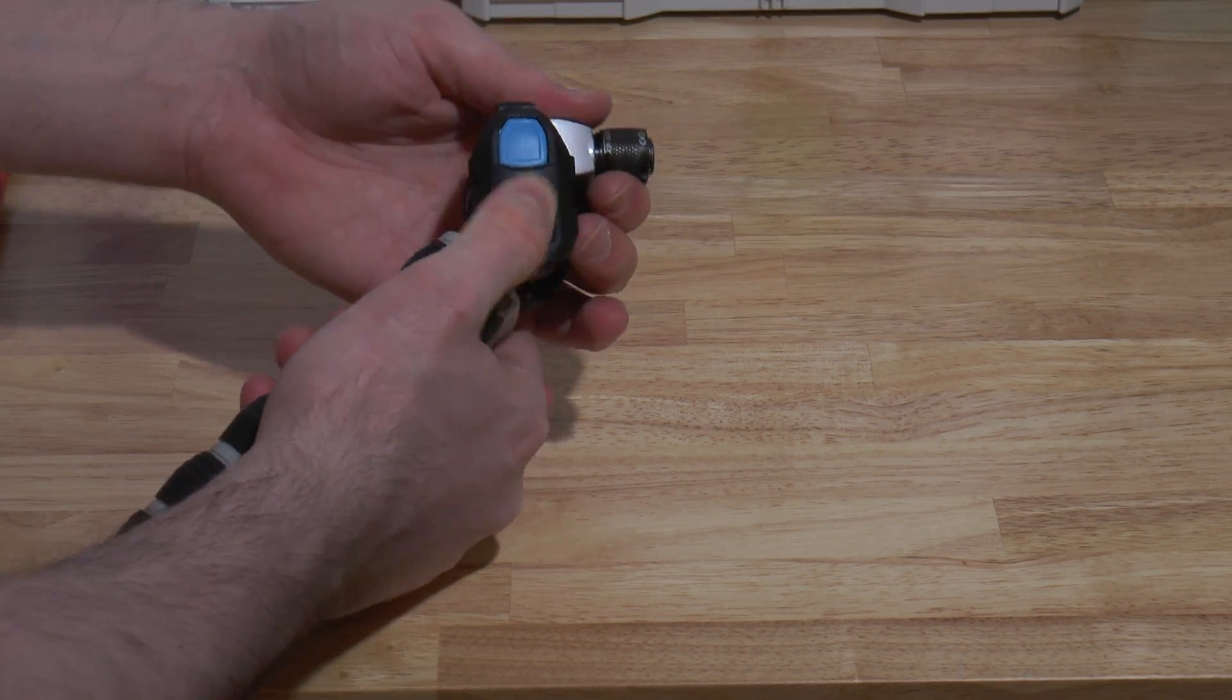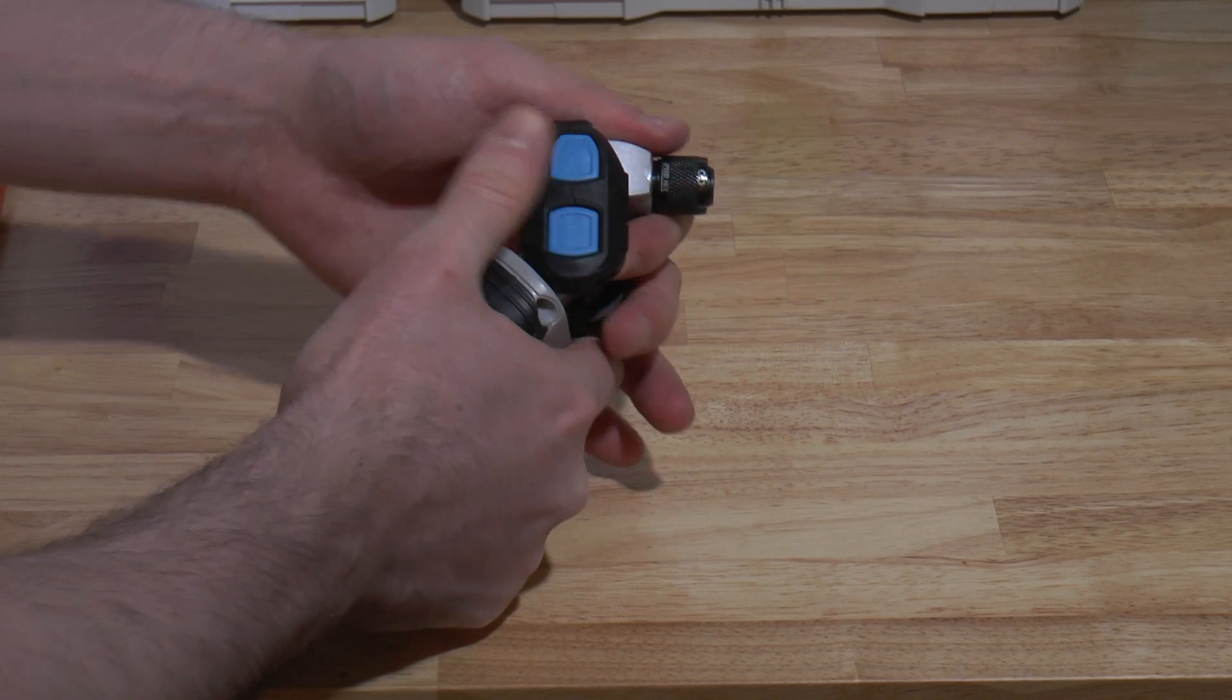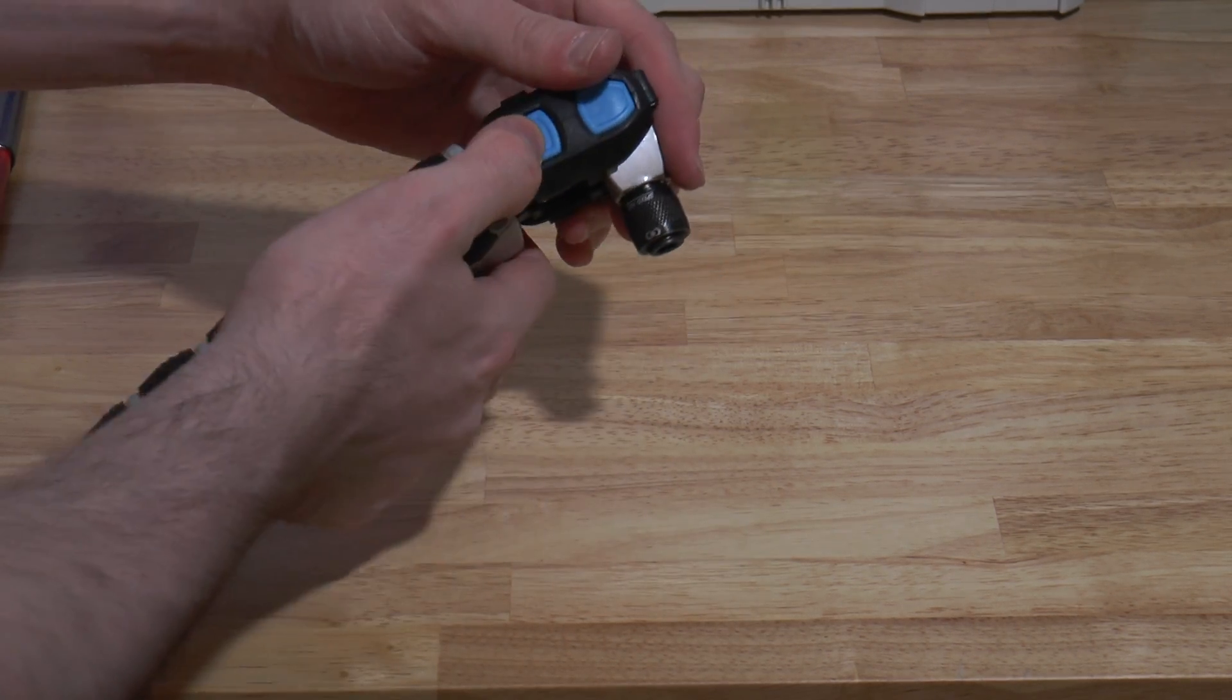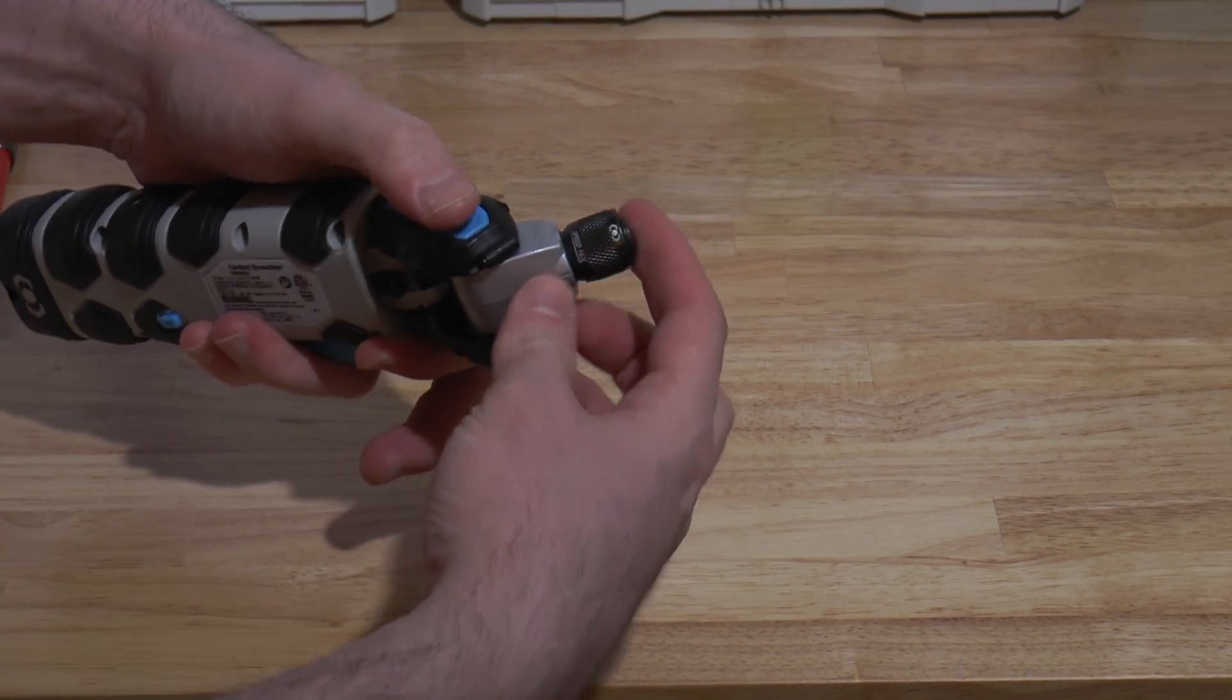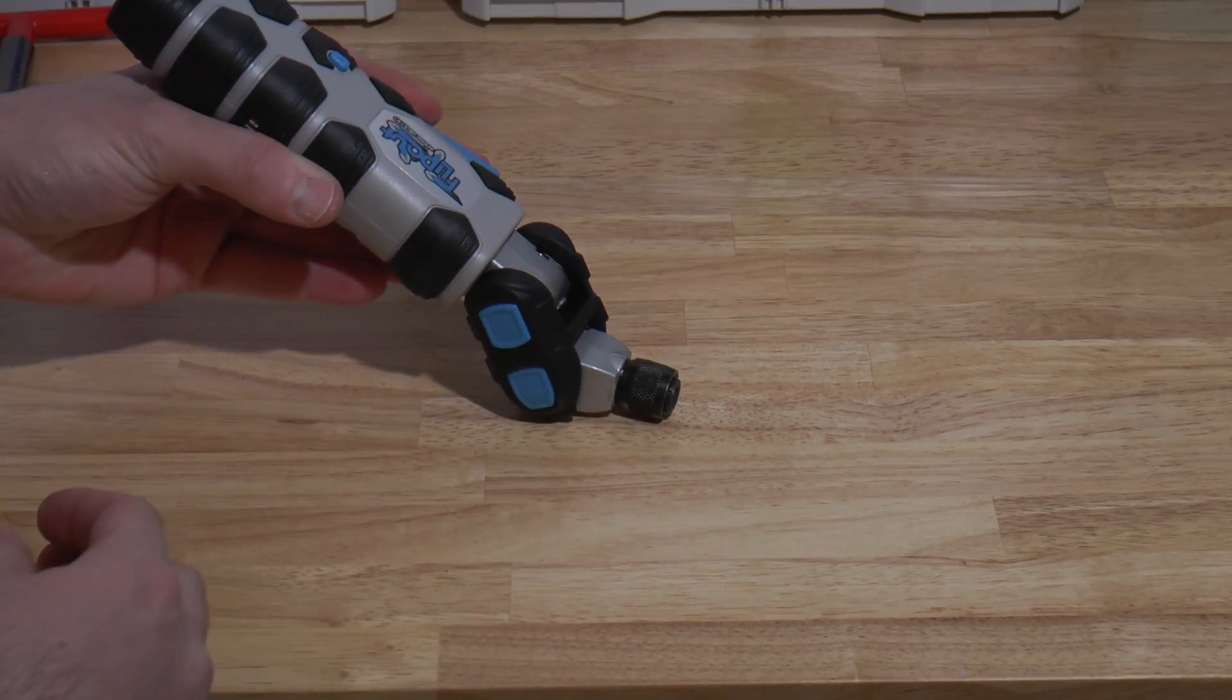Alright, then you have the two pivots here. This one controls this joint. And this one controls this one. If you need some creative angles, if you need to get almost flush, you can.